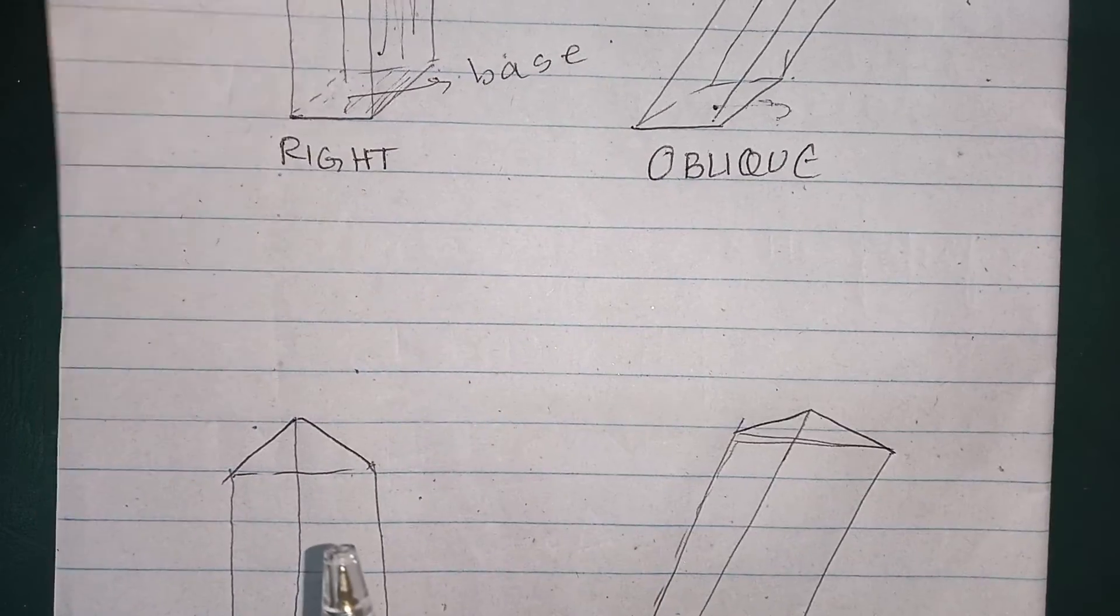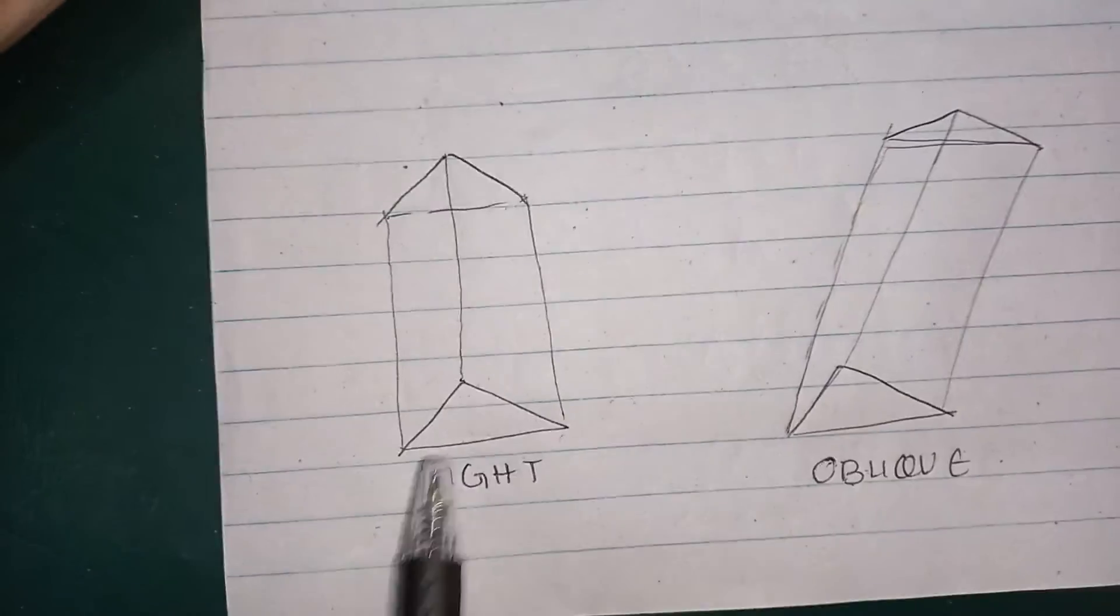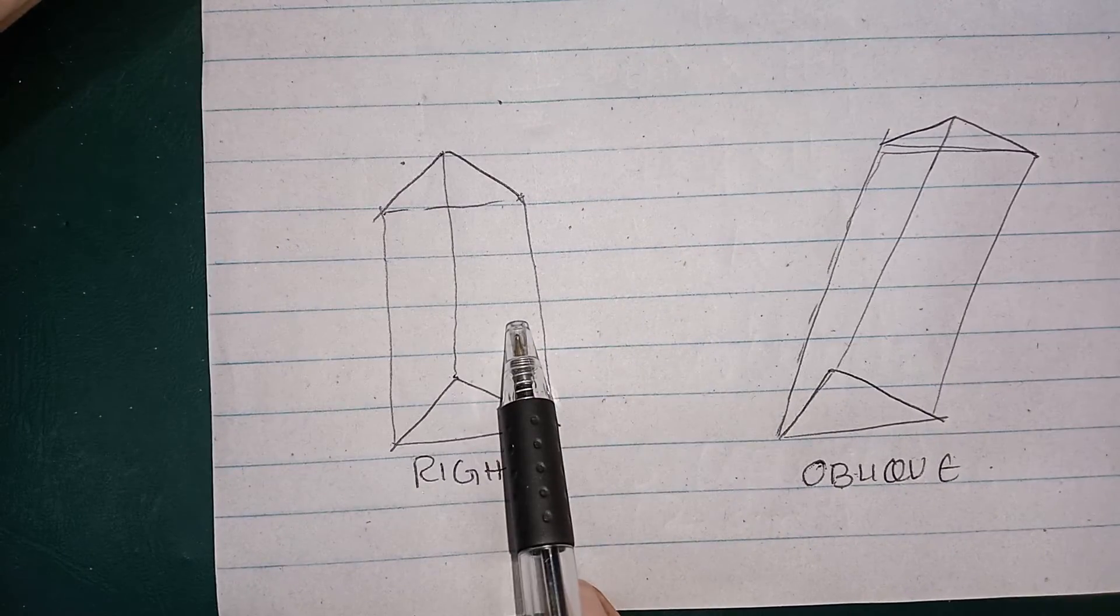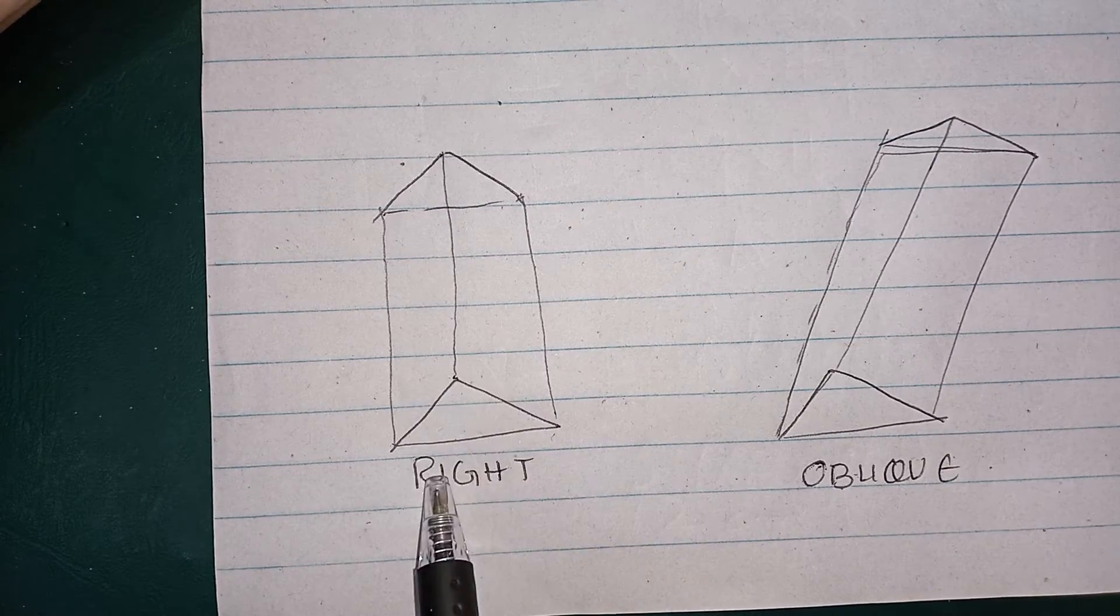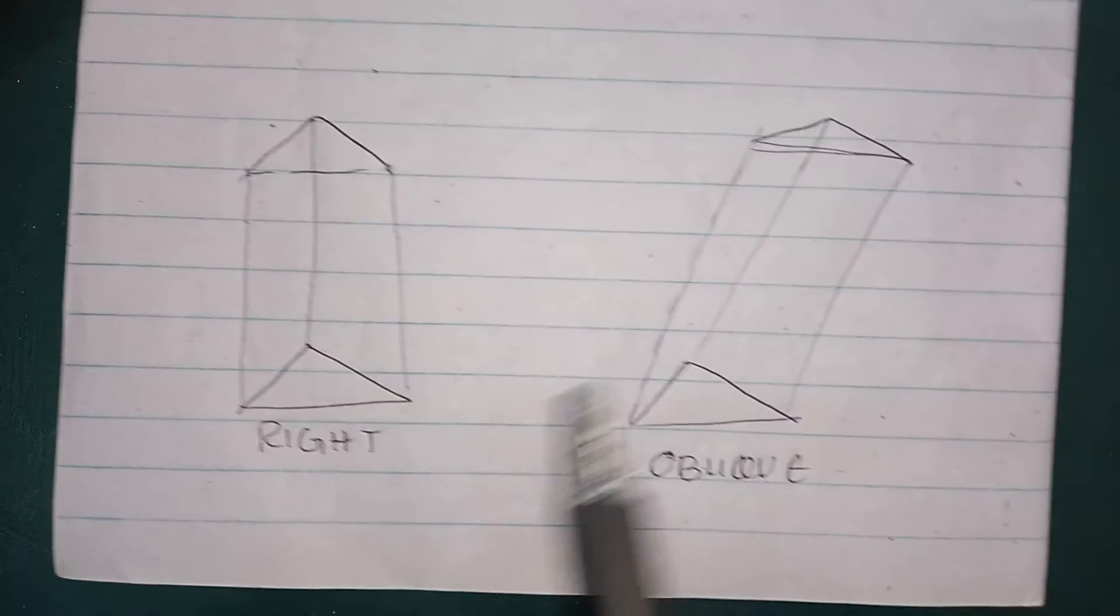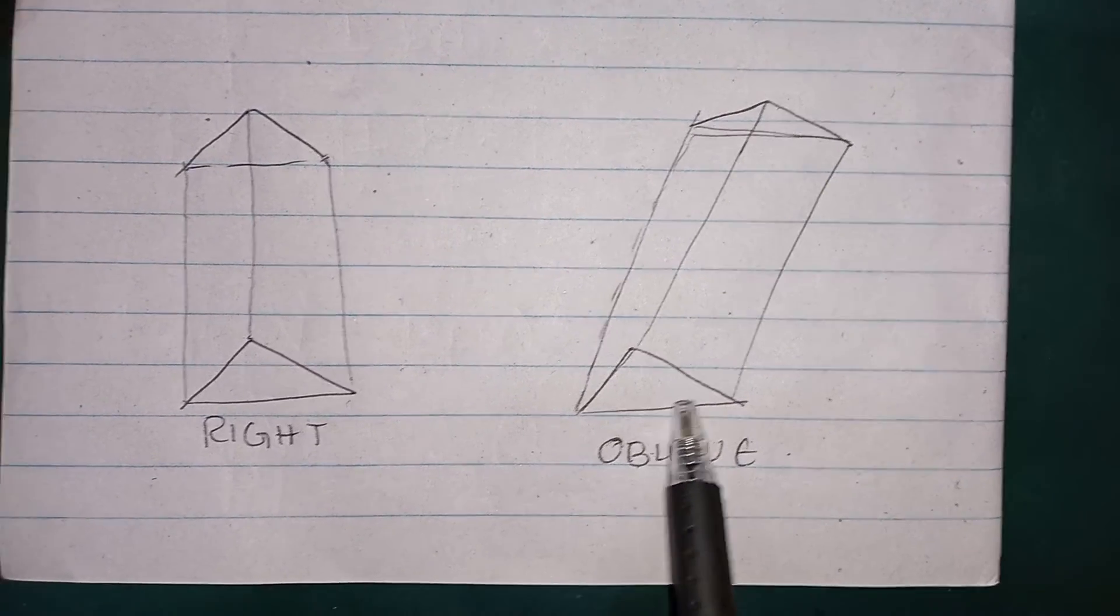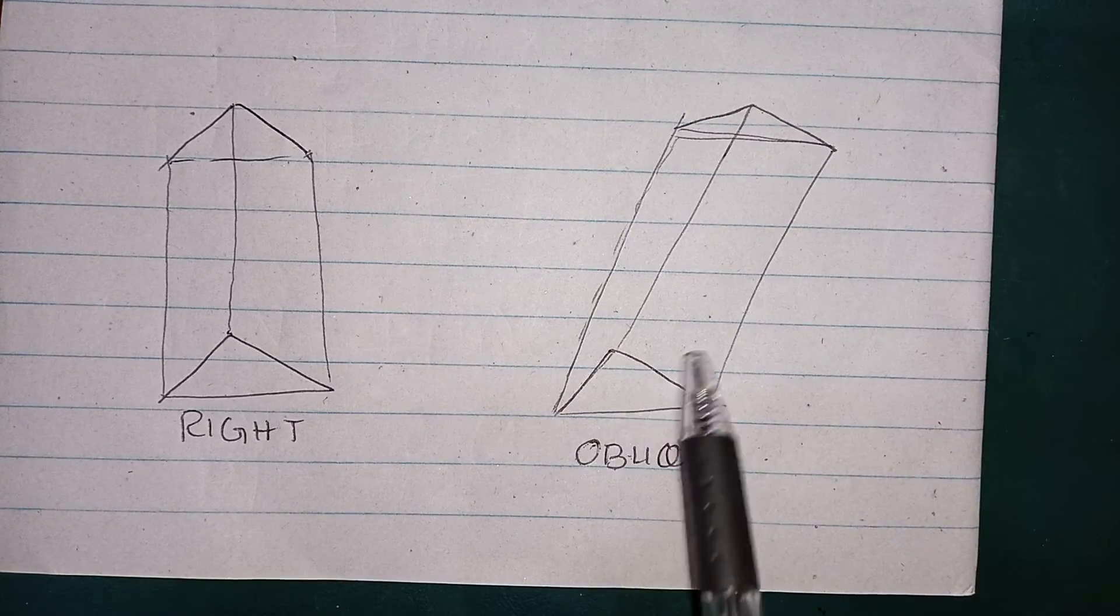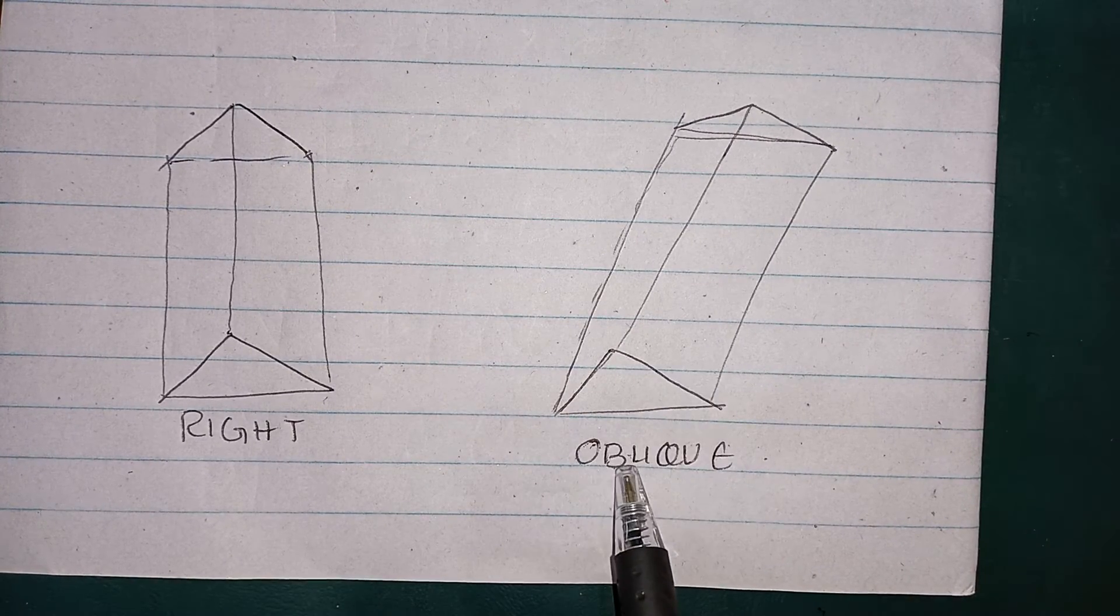As for example, this one is also the base and the lateral faces are at right angle. So we call this as a right prism and with this the both are not at the right angle. So we call this oblique.